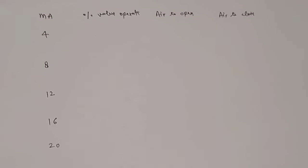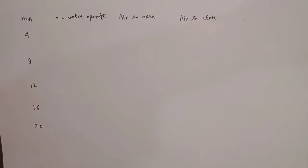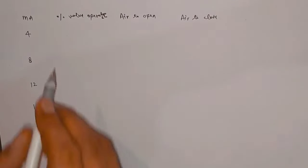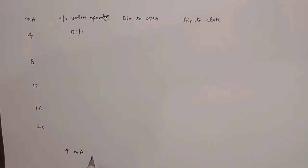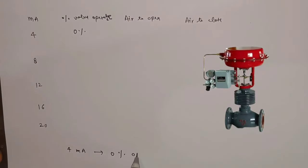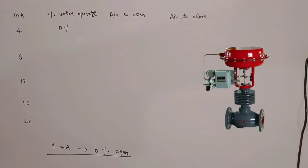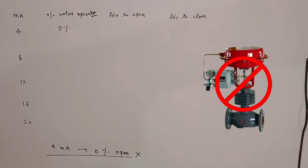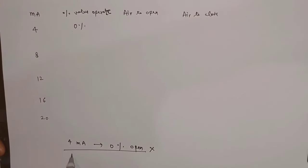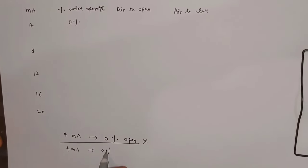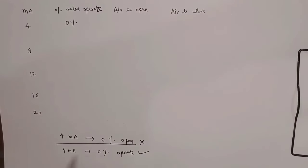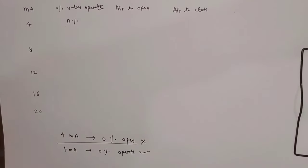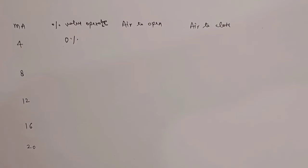Let's understand it further. Look friends, at 4 milliampere, the valve operates at 0%. Here you need to keep one concept in mind. At 4 milliampere, many people think that valve opening is 0%, but this is not applicable on all control valves. You can say it like this: at 4 milliampere, the control valve will operate 0%. That sentence is correct — not that at 4 milliampere the valve will open 0%. With this concept, you will understand everything.